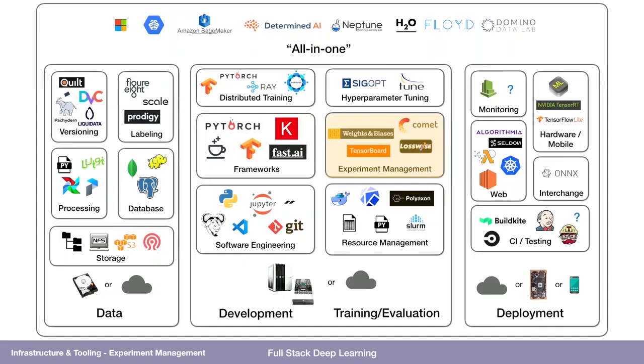What is the single biggest benefit of setting up all this infrastructure for resource management and task distribution versus just using something like SageMaker? That's a good segue to the next topic. At the top there is the all-in-one solution — that would be stuff like SageMaker — and we're going to get to it in the next 15 minutes.